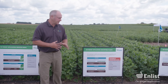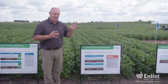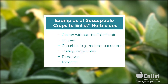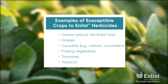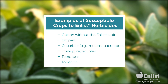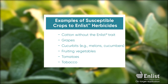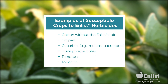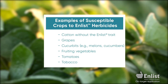We have a few examples here. Down south, cotton without the Enlist trait is a susceptible plant. Other key ones would be vineyards with grapes, fruiting vegetables like tomatoes, eggplant, and peppers. You also have cucurbits — examples would be squash, pumpkin, watermelon, cantaloupe, cucumbers, anything like that. Those are all considered susceptible plants.